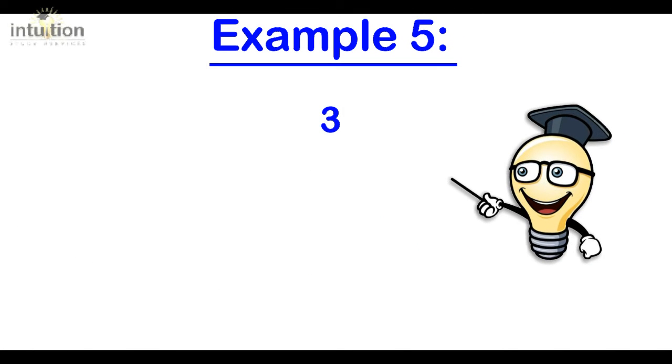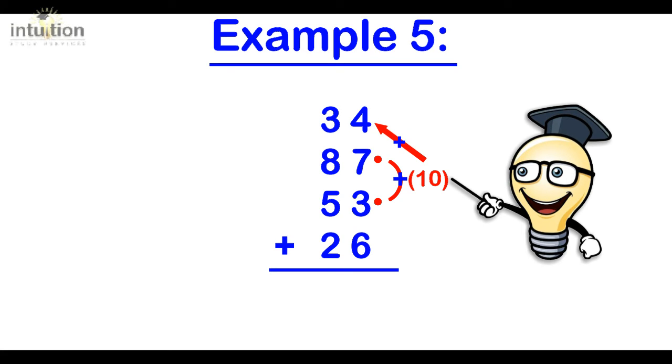Okay, so let's take a look at another example. We have 34 plus 87 plus 53 plus 26. Okay, so fixing the 34 we notice that the 7 and the 3 units complement to make 10. So we can add that directly onto the 34 making 44 and then adding the final 6 units gives us 50.